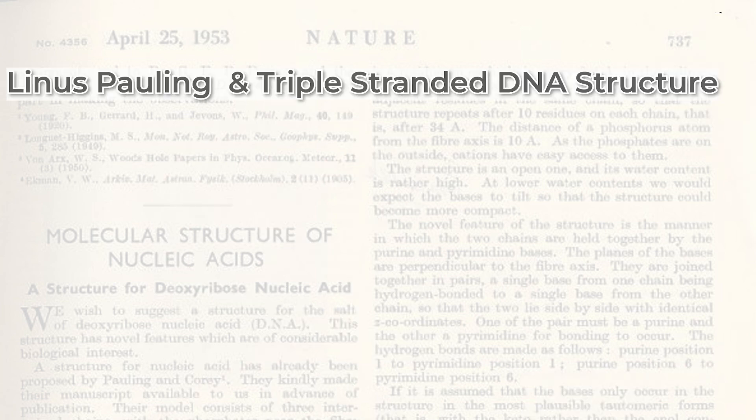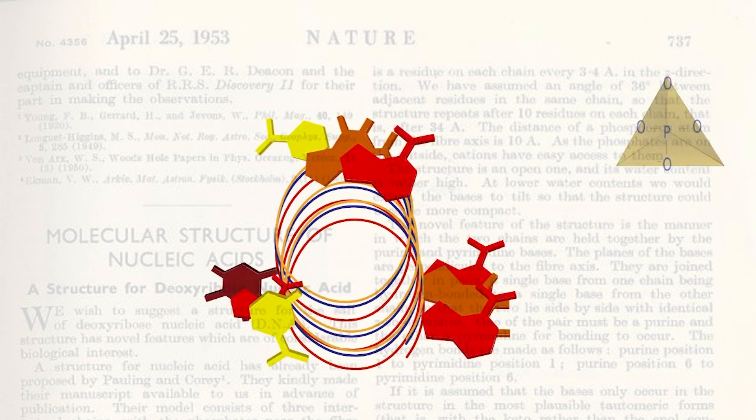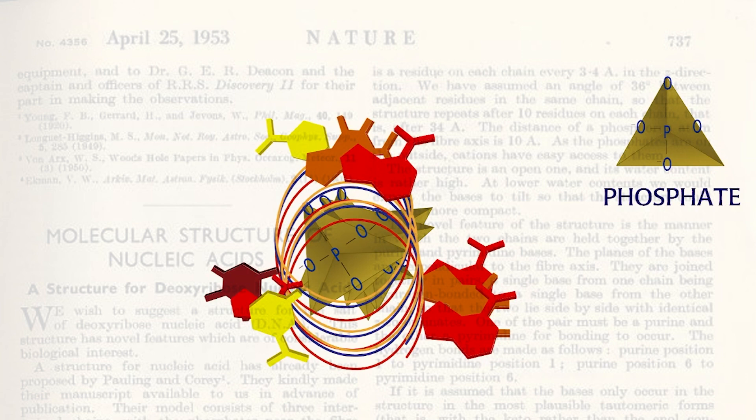Meanwhile, Linus Pauling had submitted a paper on the structure of DNA, which turned out to be a triple structure. Everyone agreed that this model couldn't be right. Pauling put the phosphate groups in the core of each helix with the nitrogenous bases facing out. Three such helices then intertwined to make one DNA molecule.